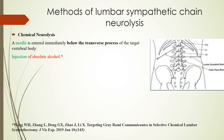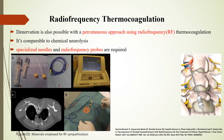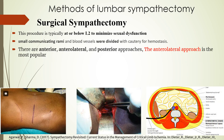Methods of lumbar sympathetic chain neurolysis include chemical neurolysis, where a needle is inserted immediately below the level of the transverse process of the target vertebral body with injection of absolute alcohol. Radio-frequency thermocoagulation is also possible using a percutaneous approach with comparable results to chemical neurolysis, though it requires specialized needles and radio-frequency probes.